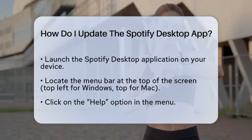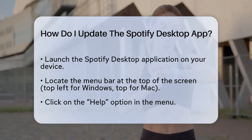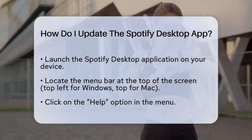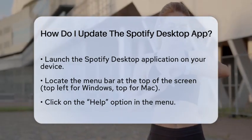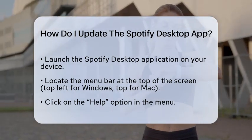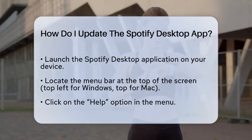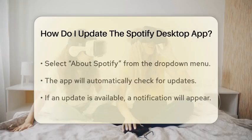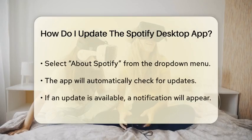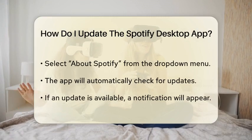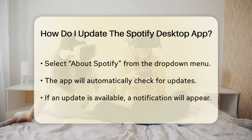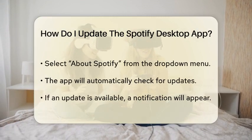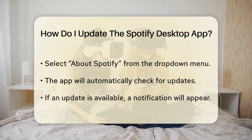First, launch the Spotify desktop application on your device. Once the app is open, look for the menu bar located at the top of your screen. On Windows, you will find it at the top left corner, while on Mac, it will be at the top of your screen.